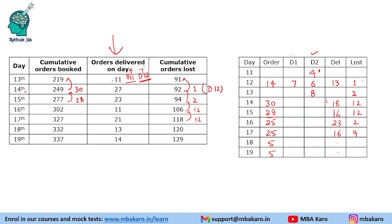Now for the 27 deliveries on 14th — these come from day 12 and day 13. Day 12 contributed 6 items delivered in 2 days, so day 13 contributed 21 items delivered in 1 day. With a loss of 2 and 29 delivered, 31 items total were ordered on day 13.